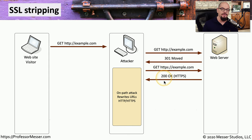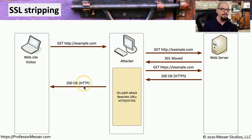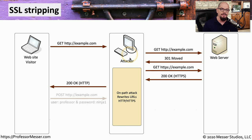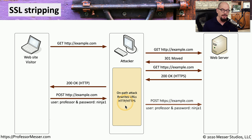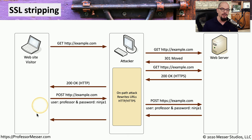The web server sends the page over the encrypted HTTPS channel to the attacker. The attacker decrypts it and then sends back the in-the-clear, non-encrypted HTTP page to the website visitor — who has no idea the attacker has made these changes in the middle. This process continues: the website visitor might send a POST command to log in with their username and password. Since this is sent in the clear, the attacker sees the credentials but passes them through to the web server over the encrypted HTTPS channel.